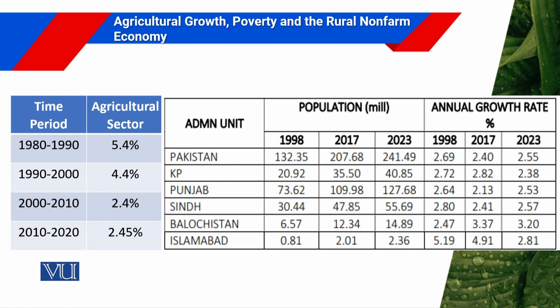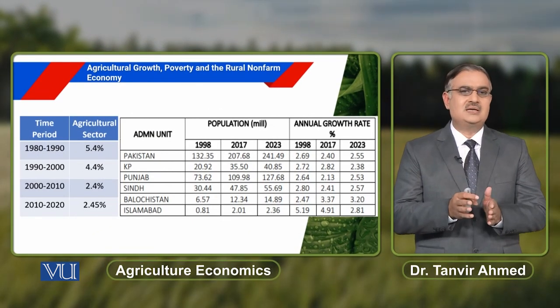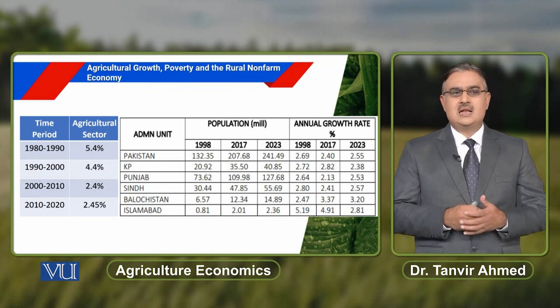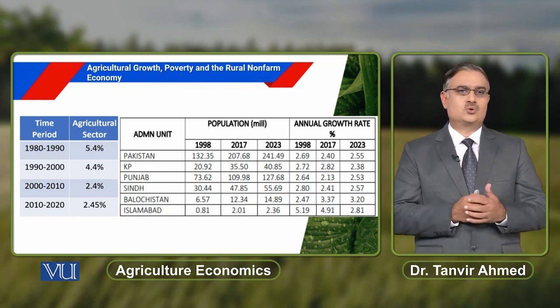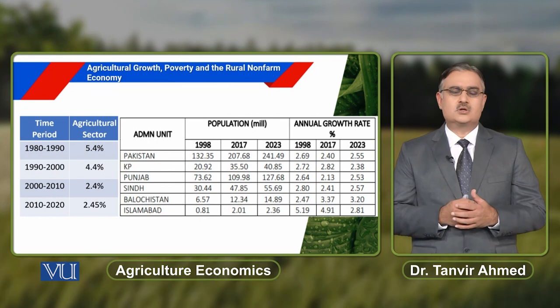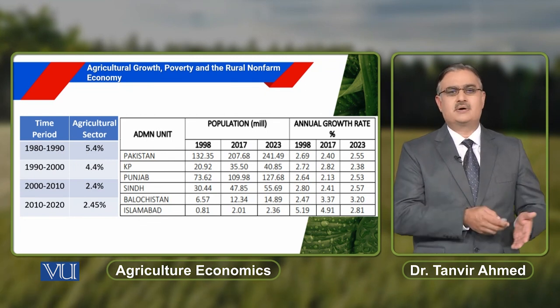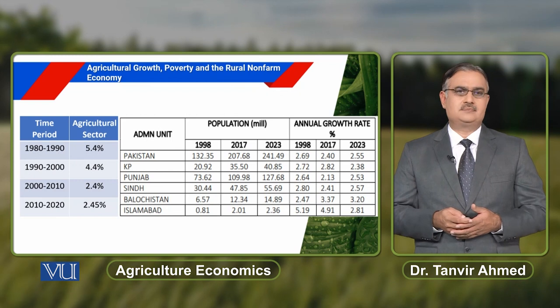If we compare the growth of the agricultural sector with population growth, we can observe that our agricultural sector is growing at a lower rate than the increase in population. In the recent population census conducted in 2023, the annual population growth rate is 2.55%, while the agricultural sector is growing below that rate.